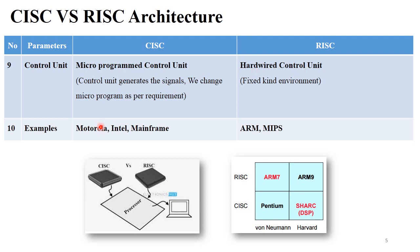Next are the examples. CISC processor architecture is generally used in Motorola, Intel, and mainframe-type processors. RISC architecture supports ARM and MIPS type processors. I will explain the ARM processor in detail in a future session. So this is the basic difference between CISC and RISC architecture.